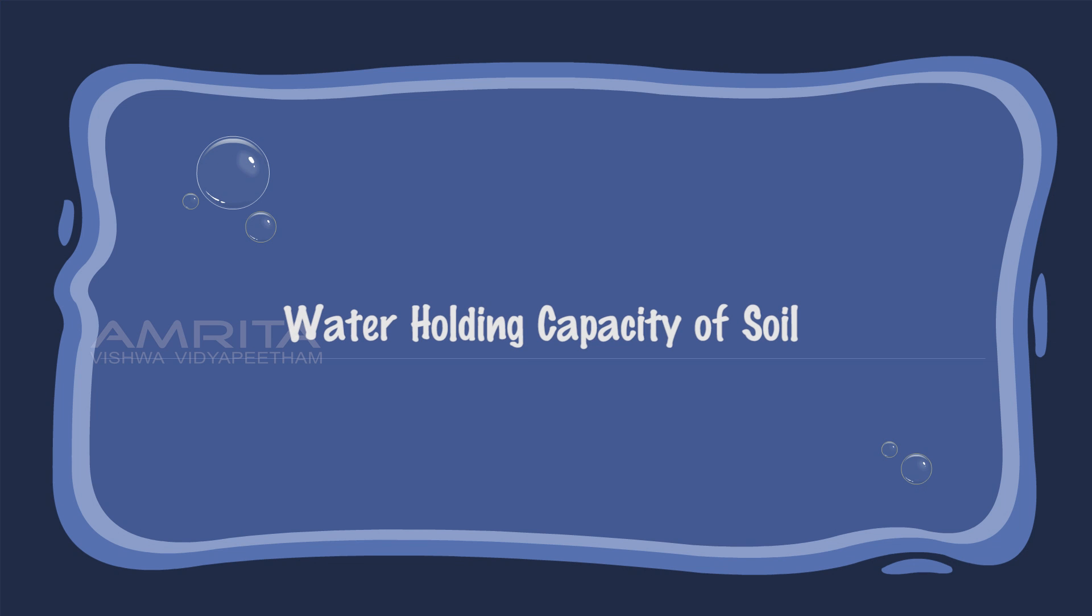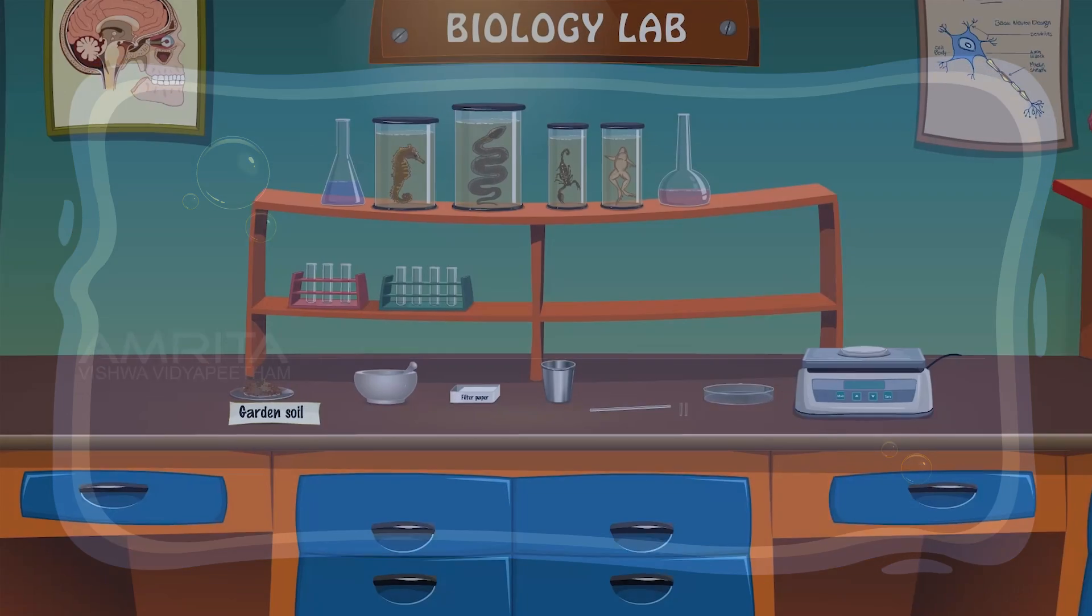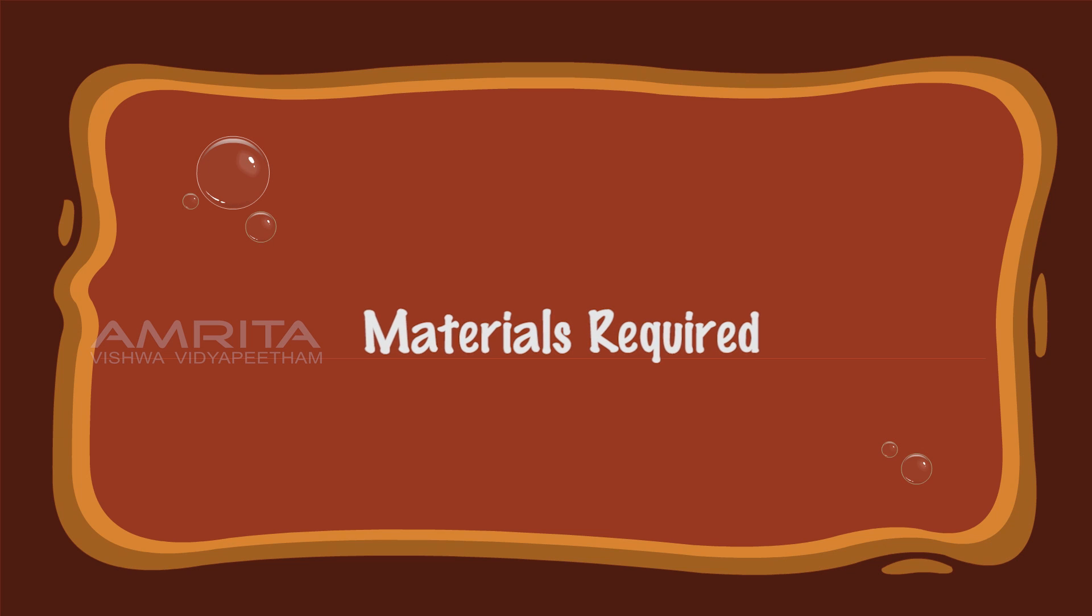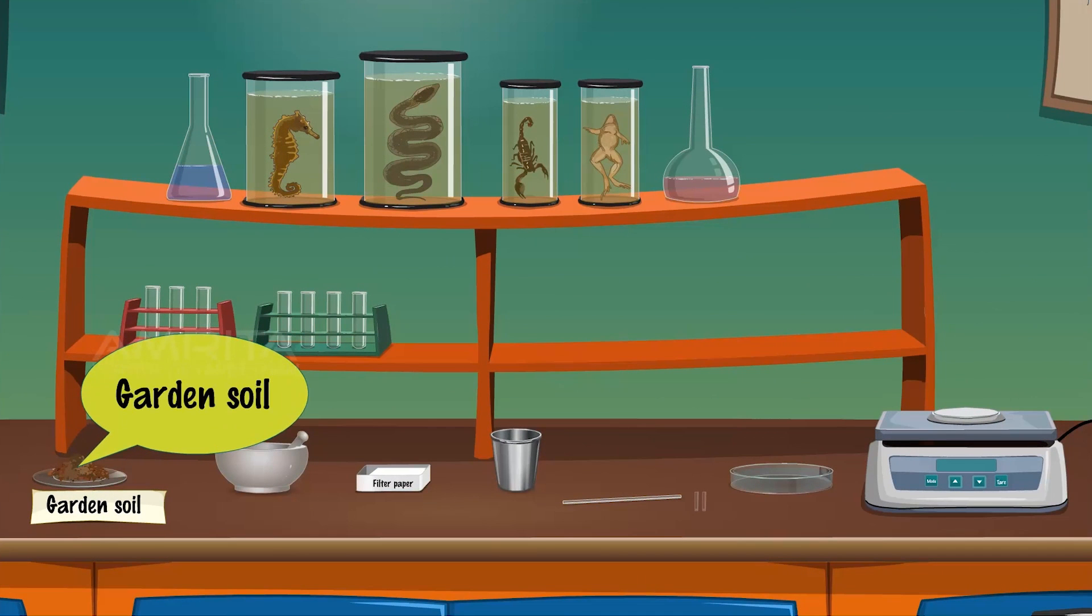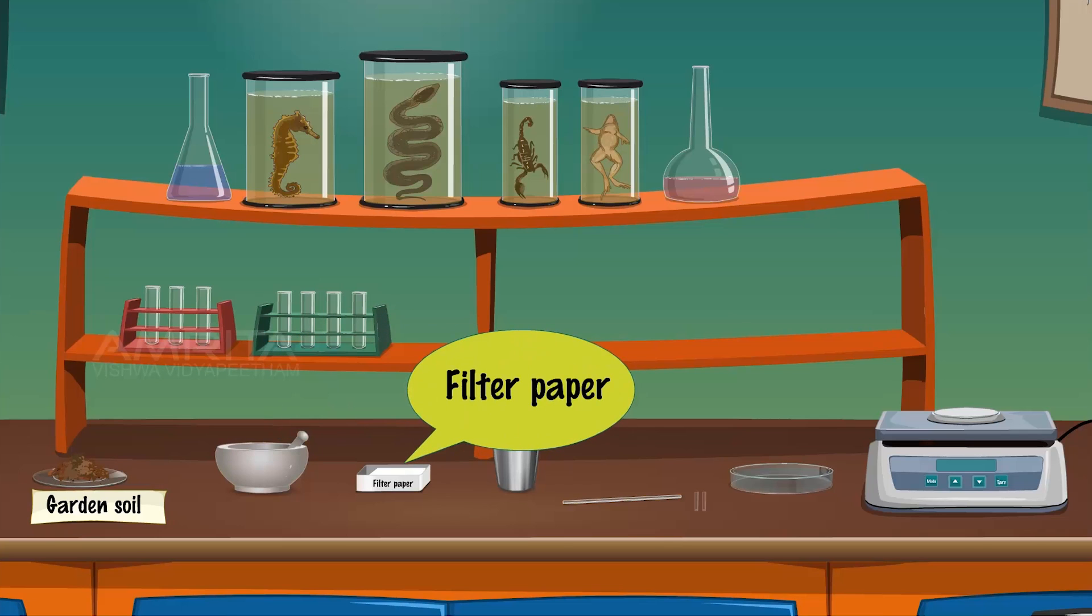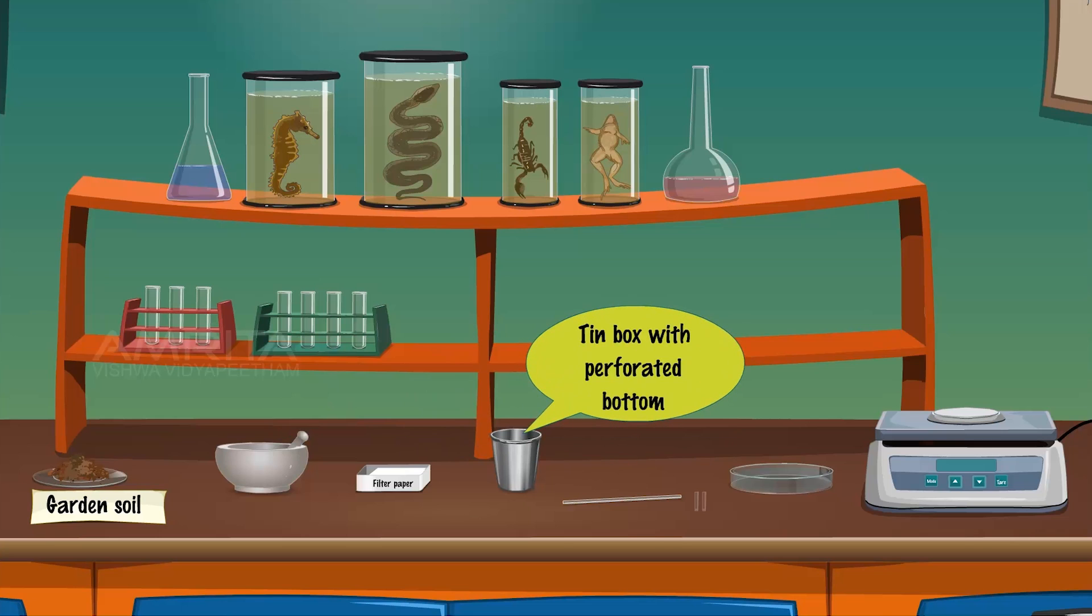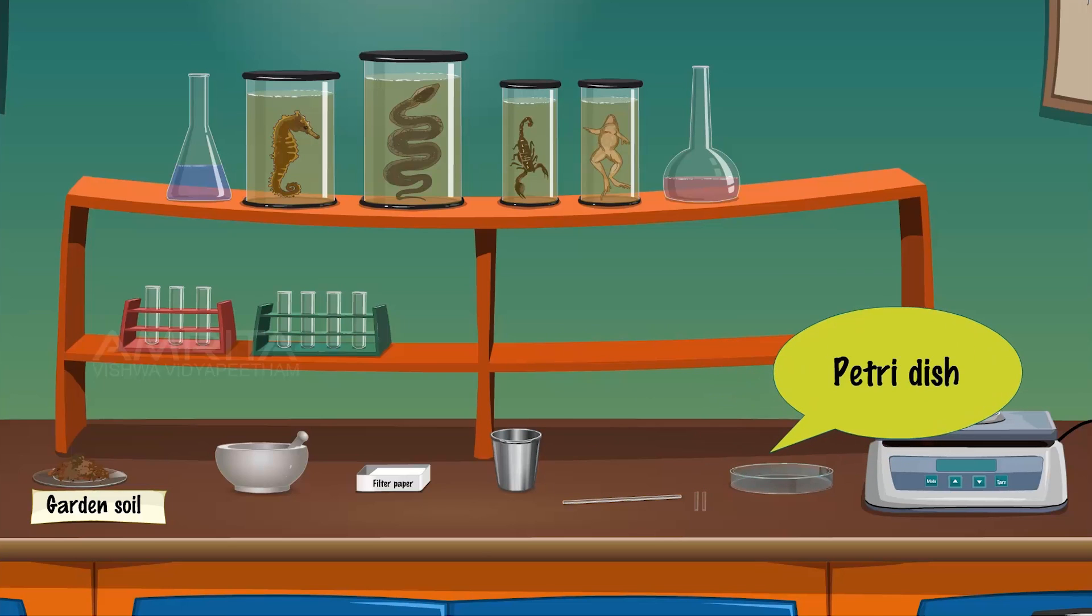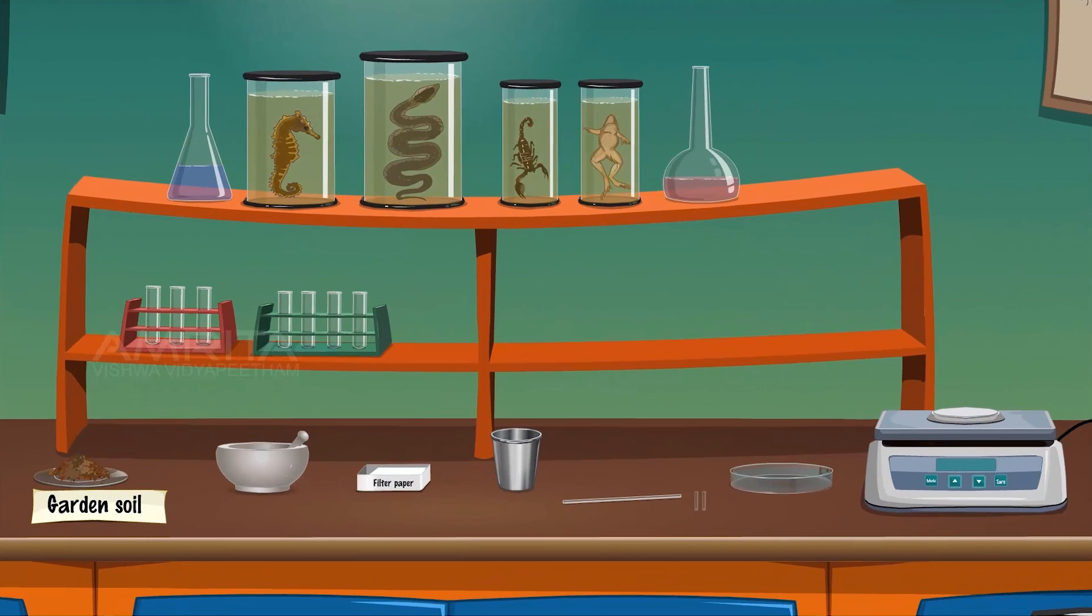Water holding capacity of soil. Materials required: soil sample from garden, mortar and pestle, filter paper, tin boxes with perforated bottoms, glass rod, small glass rods, petri dish, and weighing balance.